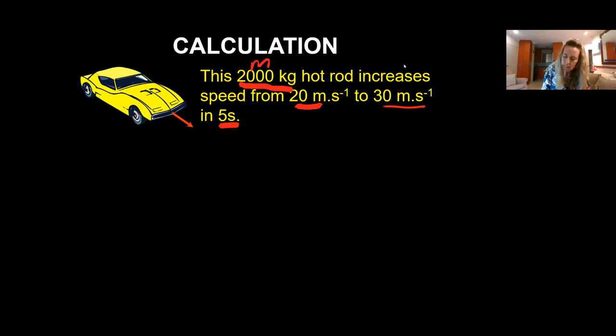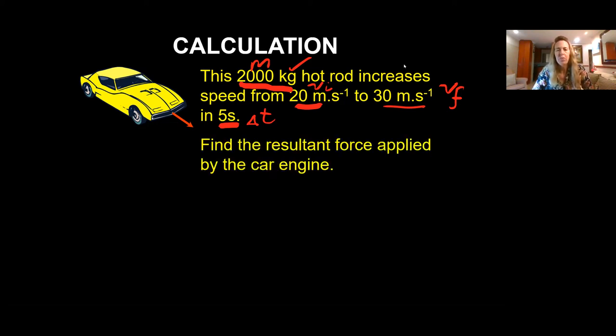So you're given mass, it's already in the right unit of kilograms. You're given an initial velocity of 20 meters per second, a final velocity of 30 meters per second, and you're given a change in time. So now we want to know what is the resultant force applied by the car engine in order for this car to increase its speed from 20 to 30 meters per second in five seconds, if its mass is 2000 kilograms.